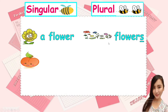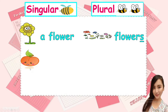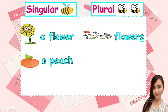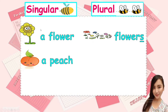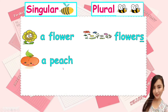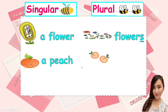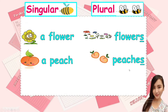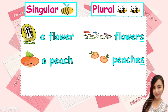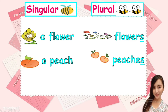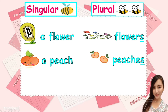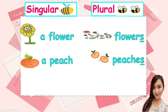Another example. What fruit is it? A peach. This is singular because it's only one. A peach. How about this? Peaches. We say peaches. There are two, so this one is plural. Peaches. It's plural because it's more than one. There are two peaches. More than one.